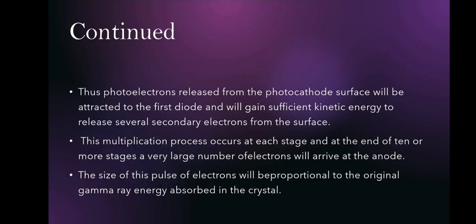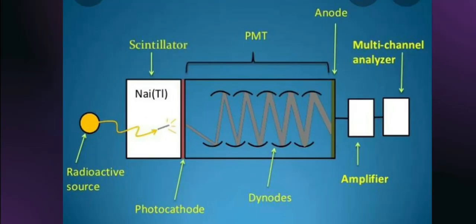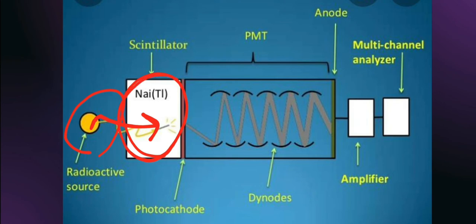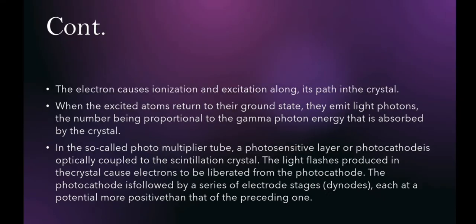As you can see here, what we have is a radioactive source and the radiations are being emitted from this radioactive source and are being absorbed by this NaI — NaI activated with Tl — which is actually a scintillator. The electron causes ionization and excitation along its path in the crystal.